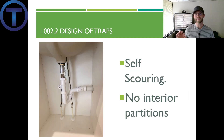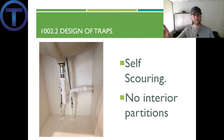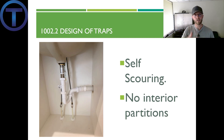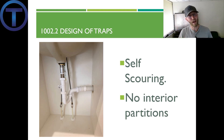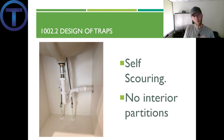Section 1002.2 talks about the design of traps. It says that it must be self-scouring — meaning as the fluid is moving through the trap, it should be washing the walls and moving everything out of the trap. We don't want stagnant materials sitting in there building up and causing blockage. Also, for the same reason, we should not have any interior partitions in the trap.